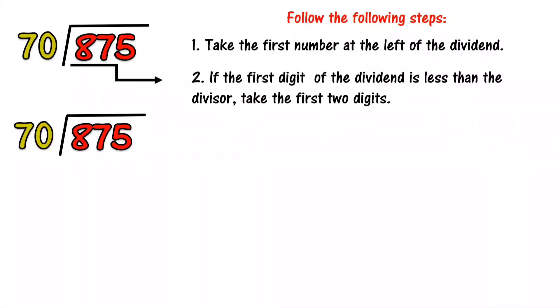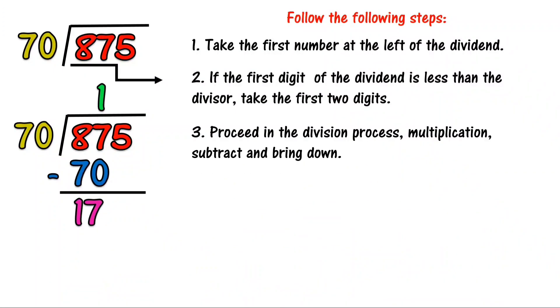If the first digit of the dividend is less than the divisor, take the first two digits, which is 8 and 7. Third, 87 divided by 70 is equal to 1. Proceed in the division process: multiplication, subtraction, and bring down. 1 times 70 equals 70. 87 minus 70 equals 17. Bring down 5.